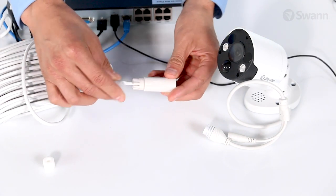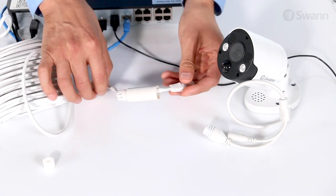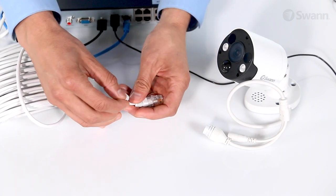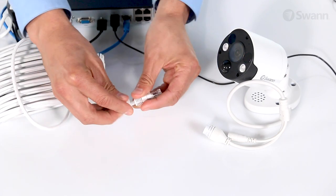Next, slide the large barrel connector over the Ethernet cable as shown. Now, split the foam piece and slide it over the cable.